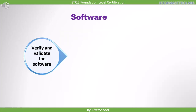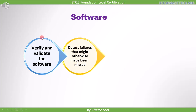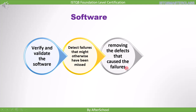Now let's discuss the final level of testing during the development process, and that is the software level. Let's find out how testing the software contributes to the success of the project. Once the software is ready, we verify and validate it. Now that the software is functional and the code is ready, we can perform dynamic testing on it. Once we perform dynamic testing, we detect failures that might otherwise have been missed. If we don't do the testing at this level, there is a fair chance that we will miss some errors, and they will finally be discovered when the software is in operational use. Next is removing the defects that cause the failures, so we fix the problems because of which the software is failing.